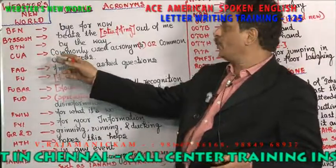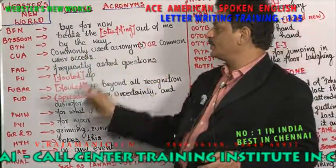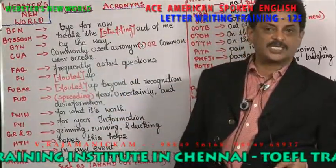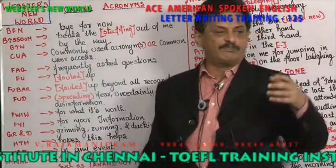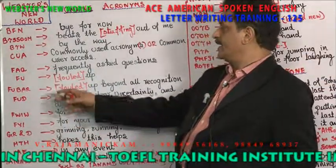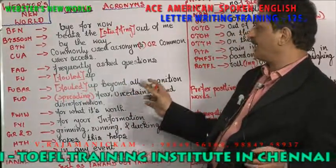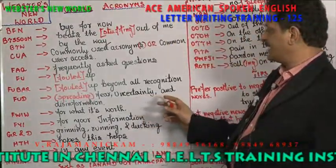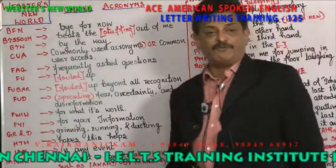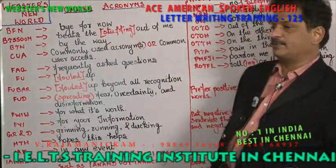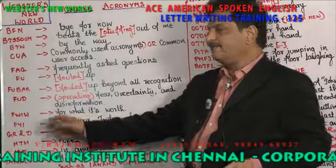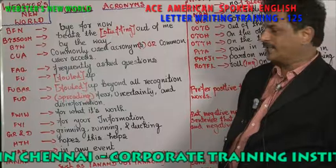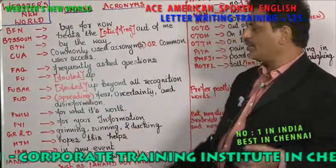All these are acronyms. CUA — commonly used acronyms. FAQ means frequently asked questions. FU means 'fouled up' — meaning you are confused. FUBAR means 'fouled up beyond all recognition' — you are totally confused. FUD means spreading fear, uncertainty, and disinformation — spreading lies, rumors, and misinformation. FWIW means 'for what it is worth.'